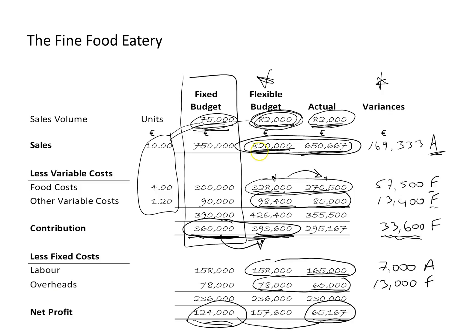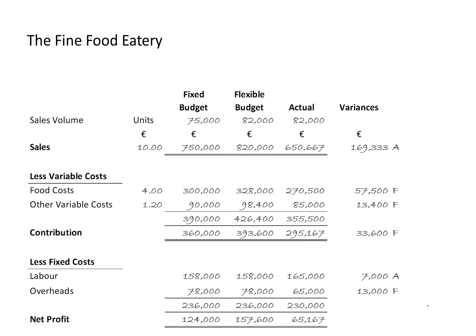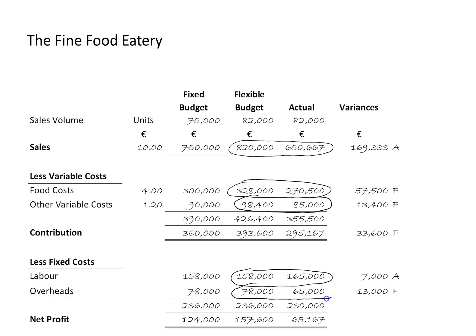So I'm just going to tidy this up and put in a little highlight to show which figures we've compared in calculating the variances. We compare the sales figures, food cost figures, other variable cost figures, fixed labour figures, fixed overhead figures, and for the volume variance we compared the fixed and flexible budget profit figures. That completes the budget control statement, which is part A. We move on now and look at the reconciliation in part B.